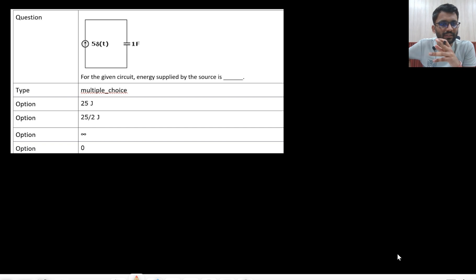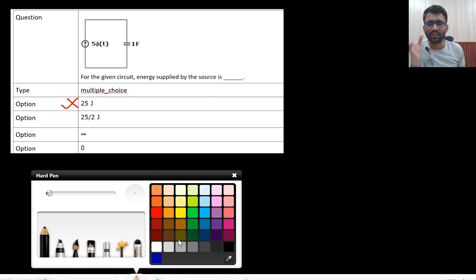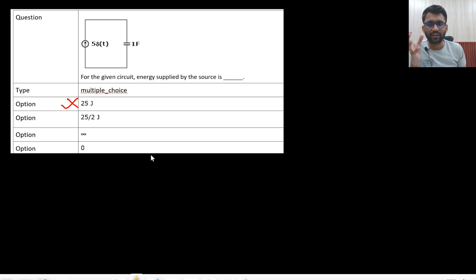Hi everyone, so in AIMT2 this question was there, this was some 23rd or 24th question. You had to find the energy supplied by the source and then I gave this answer, but this answer is actually wrong. Where did I do the error, I will tell that and what is the correct answer. Thanks to one of our students who pointed out this mistake and then I realized I did it wrong.